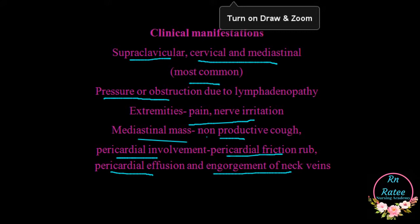On radiograph, we can see that the mass is in the mediastinal portion. A non-productive cough develops, and there can be pericardial involvement because mediastinal masses are very close to the pericardial area. We can notice pericardial friction rub, pericardial effusion, and neck vein engorgement, meaning circulation will not be proper.